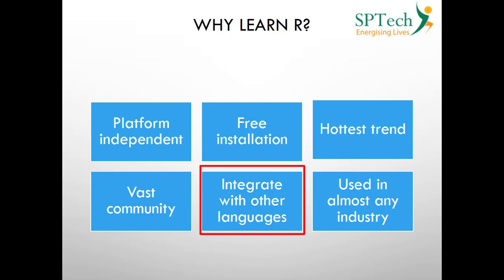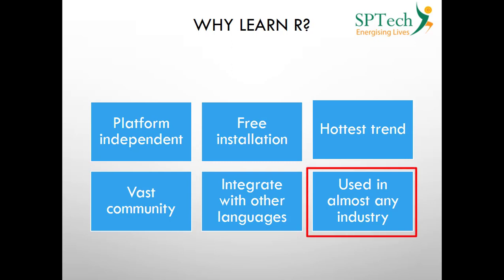R integrates with other languages — it can be combined with C, C++, and Java to write comprehensive code. It is also used in almost any industry: e-commerce, academics, hospitality, and more. Name an industry and there is an R implementation there. These are the reasons why R has grown into such popularity.